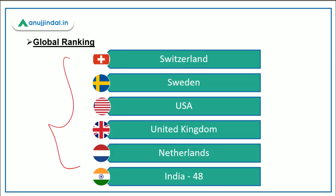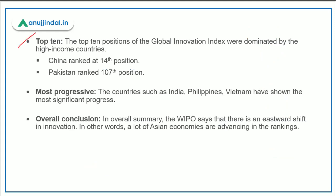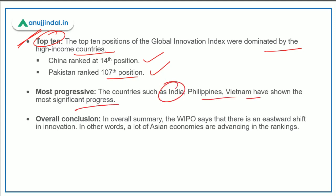In the global ranking, Switzerland was at number one, Sweden number two, USA number three, UK number four, and Netherlands at fifth position. The top ten countries are dominated by high-income countries. China is at 14th position and Pakistan is at 107th position. According to this report, countries like India, Philippines, and Vietnam have shown the most significant progress. WIPO noted that innovation is shifting westward — Asian economies are advancing in the rankings, with greater focus on innovation.